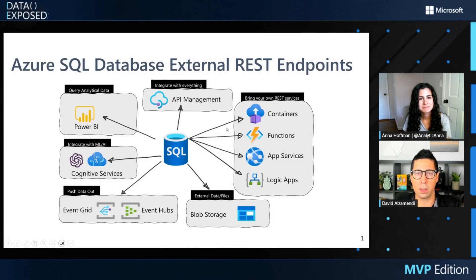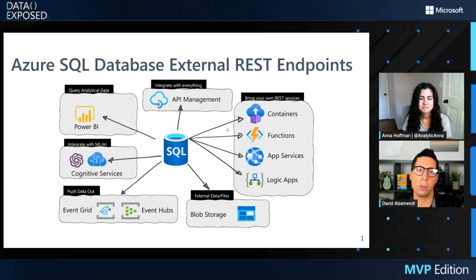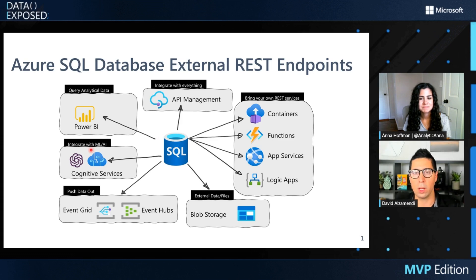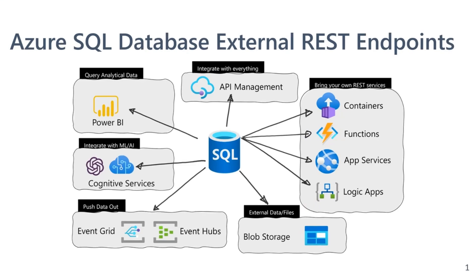About one year ago, this became GA — generally available — and it's the availability of using REST endpoints from Azure SQL DB. That basically means that from Azure SQL DB, you can now query and execute many different REST APIs that are available in Azure. This opens a lot of opportunities from an Azure SQL DB point of view. Today, we're going to be focusing on the Azure Logic Apps connectors.